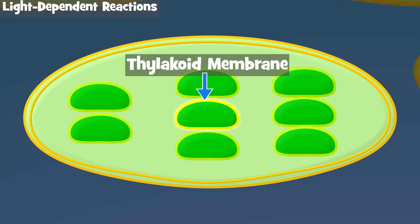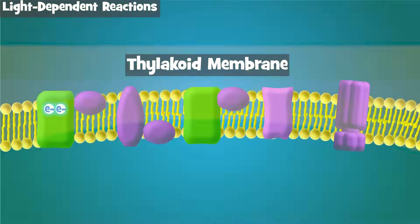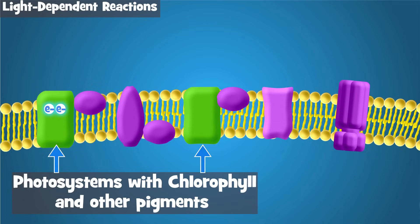Now let's zoom in on the thylakoid and focus on the thylakoid membrane. This is where pigments such as chlorophyll are found, and is where light gets absorbed. The pigments are arranged in clusters called photosystems.